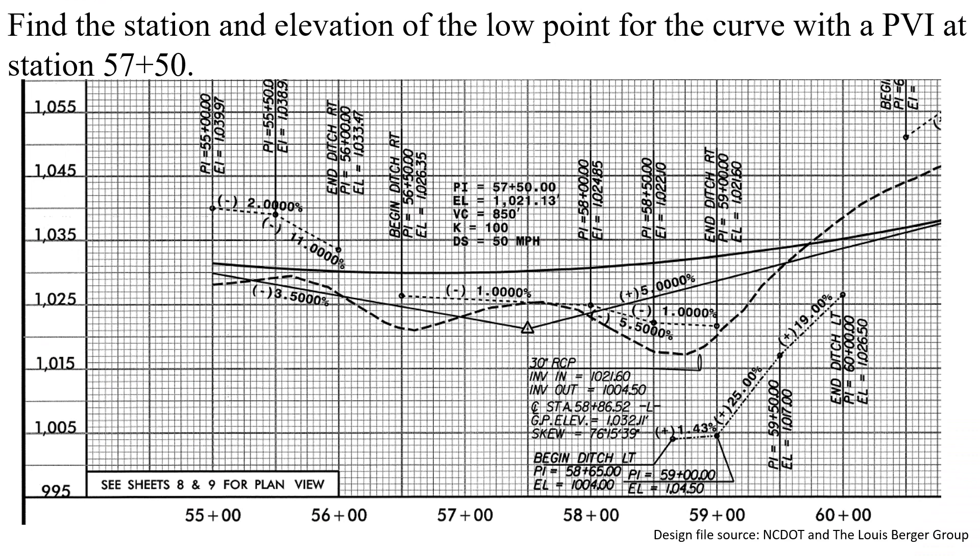In this problem, we're asked to find the station and elevation of the low point for the curve with the PVI at station 57 plus 50.